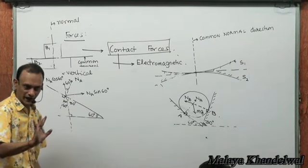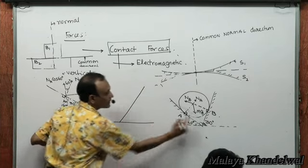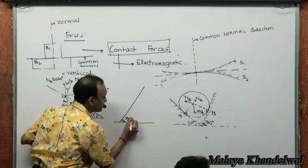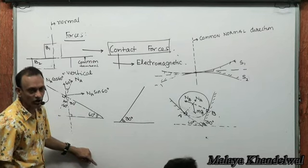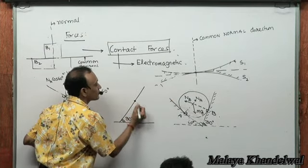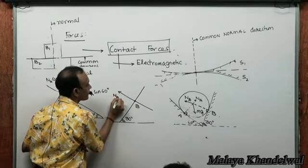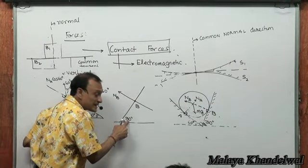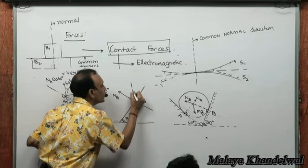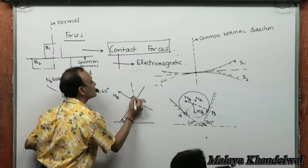At point B, the inclined surface makes an angle of 30° with the horizontal. So the perpendicular NB makes 30° with the vertical. NB can be resolved as NB cos 30° vertically and NB sin 30° horizontally.